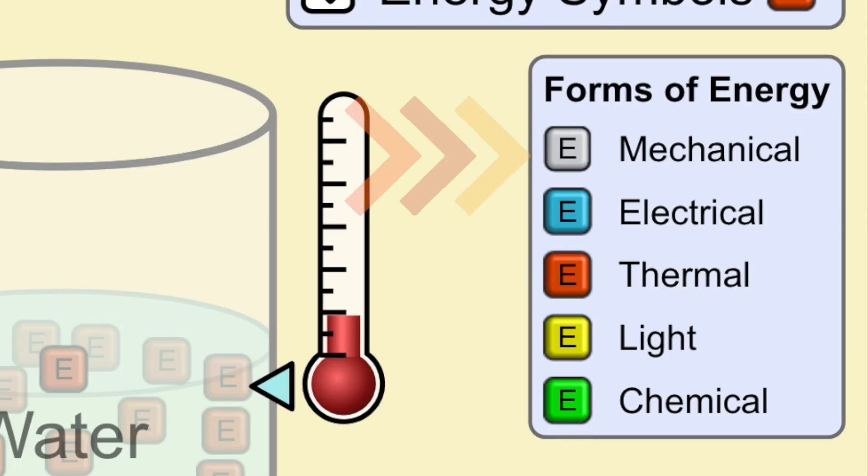The gray is mechanical, the blue is electrical, the red is thermal, the yellow is light energy, and finally the green E represents chemical energy.